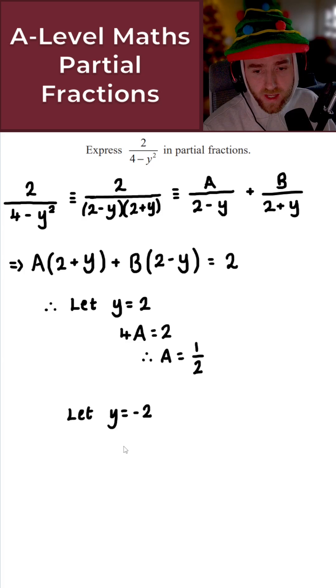So what I get here is 4B. Where's my pen gone? There it is. So 4B equals 2. And in that case, we get the exact same solution for B. So B here is also equal to 1 over 2.